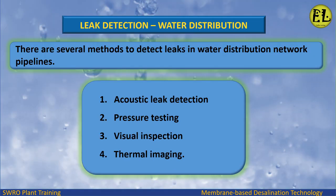Leak Detection in Water Distribution. There are several methods to detect leaks in water distribution network pipelines: Acoustic Leak Detection, Pressure Testing, Visual Inspection, and Thermal Imaging.